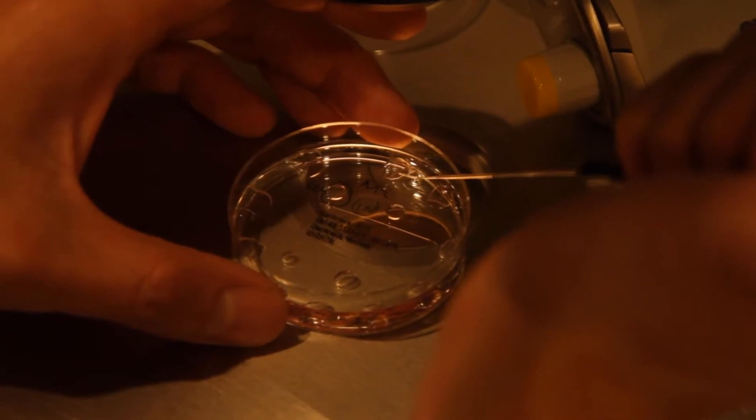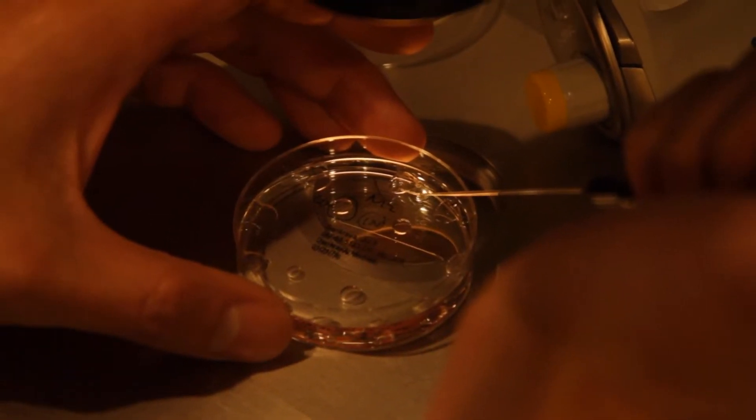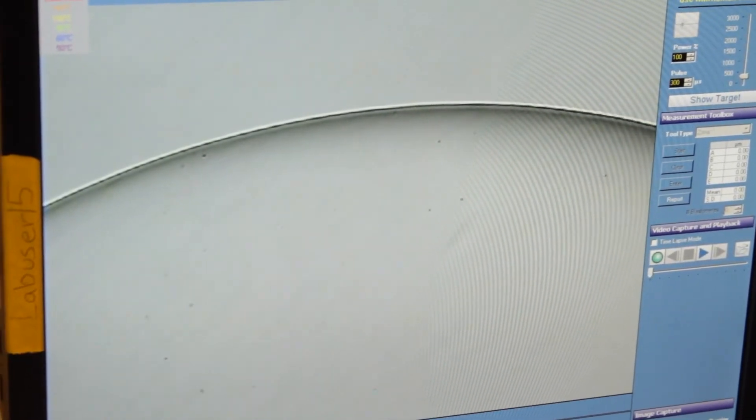Now Donna is going to inject a single sperm into each egg that she has there on the dish. The sperm are placed into a viscous solution called polyvinylpyrilidine, or PVP, and that slows them down.